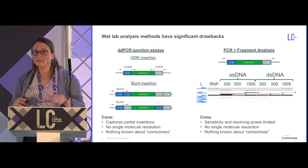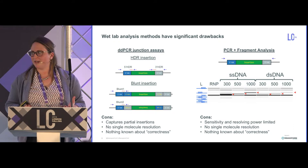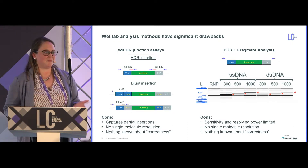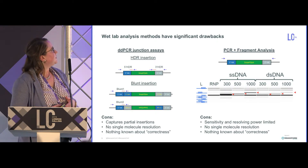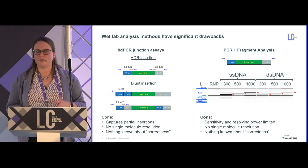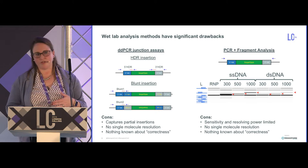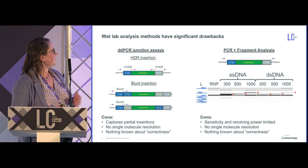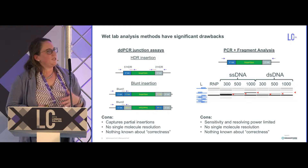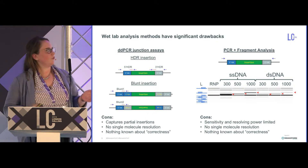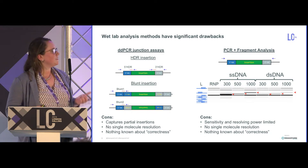For the past two to three years at IDT, we've been trying to look at these large HDR insertions without the capability to bring long-read sequencing in-house. The proxy methods we've used to estimate insertion rates include droplet digital junction PCR assays for either the 5' or 3' insertion junction, assays to look at blunt integration in both orientations, and PCR to amplify around the region of interest and look for size differences by fragment analysis.